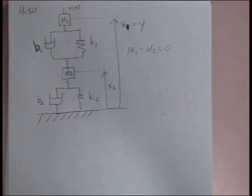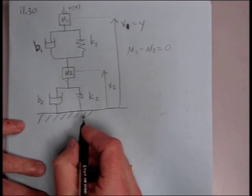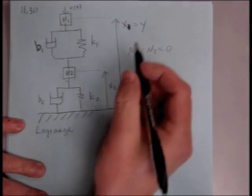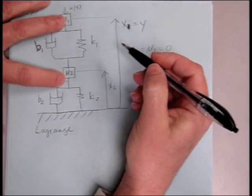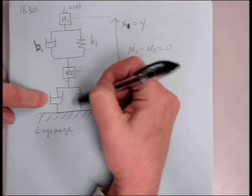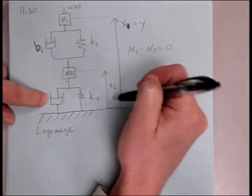I want to help you get started on finding the system equations. One way to do it, since we just got done with Lagrange, would be to use Lagrange. All right, so let's look at our system. We have two masses, spring and damper in between the masses, and the spring and damper connecting the lower mass to the ground.